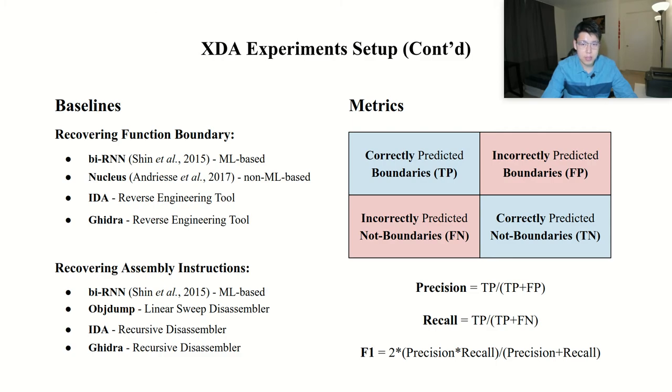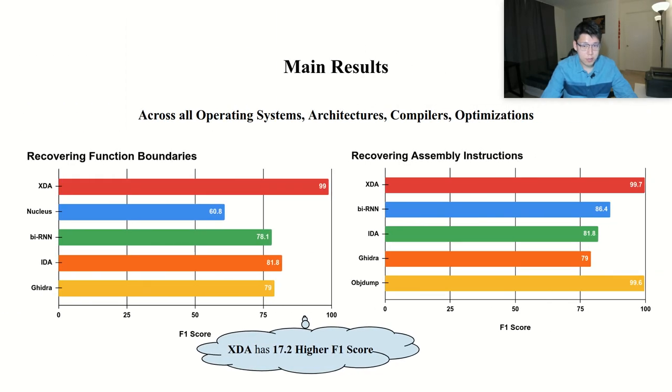We average the F1 scores achieved by XDA and other baselines on all datasets. We find that XDA achieves 17.3% higher F1 score than the second best tool. Moreover, we notice that OBJDump has very high F1 score, but it is just because the number of cases of inline data makes up only a tiny fraction, which is less than 1% in our dataset. But OBJDump consistently fails to distinguish inline data throughout all of our dataset.